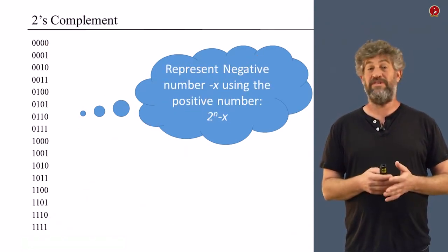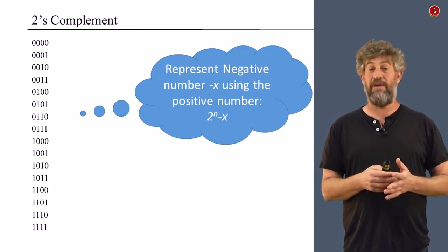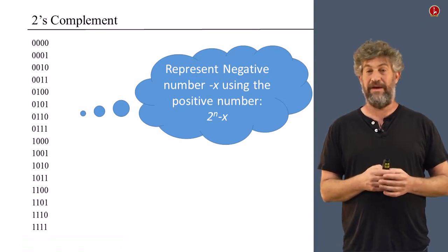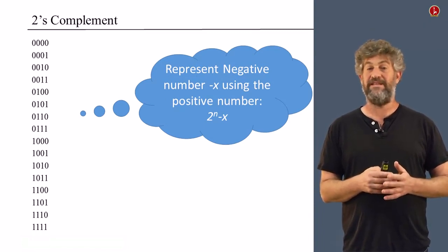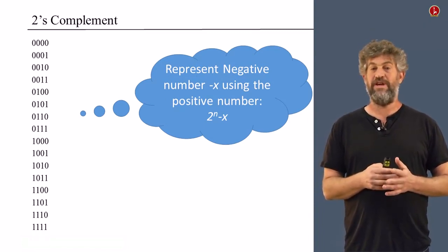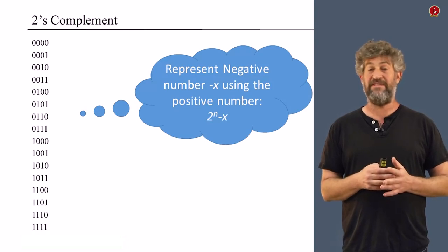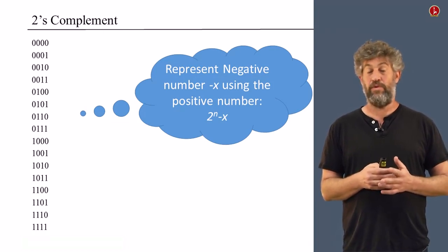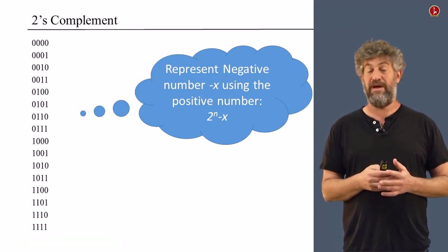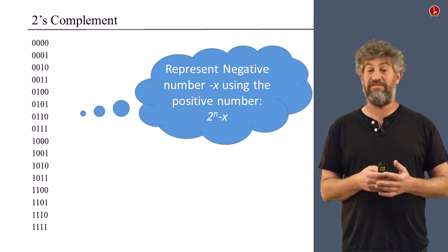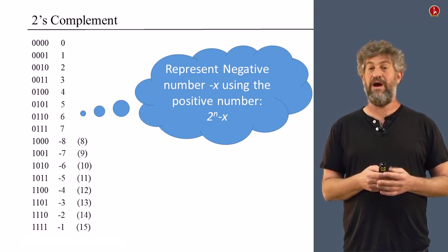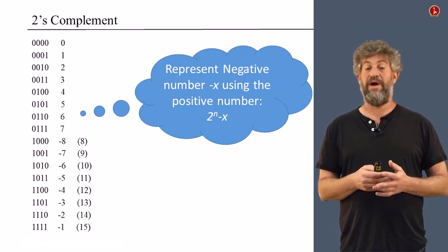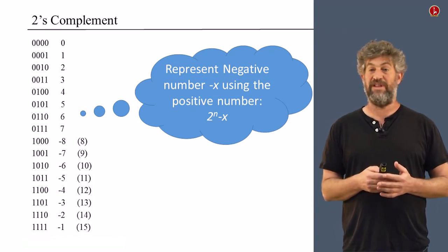Here is what people use instead. They use a system called two's complement and it has a very simple idea. If you want to represent a negative number, negative x, you just instead represent the positive number, 2 to the n minus x. In our case of 4 bits, 16 minus x, which is going to be a positive number and you're going to represent it like we've seen so far. Here are the numbers. You have 0, 1, 2, all the way up to 7 as usual.